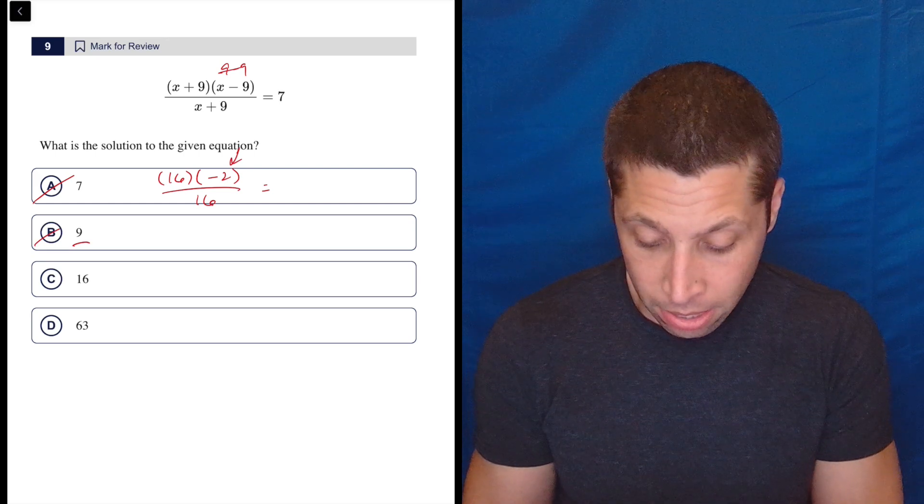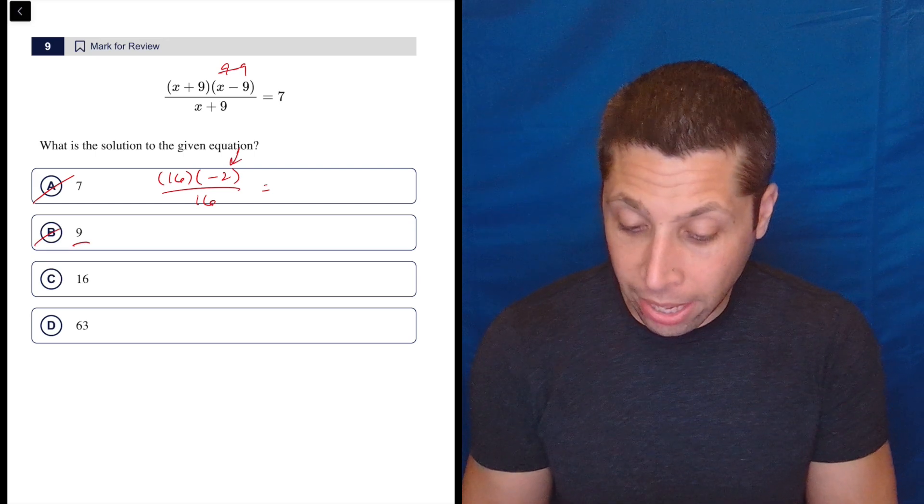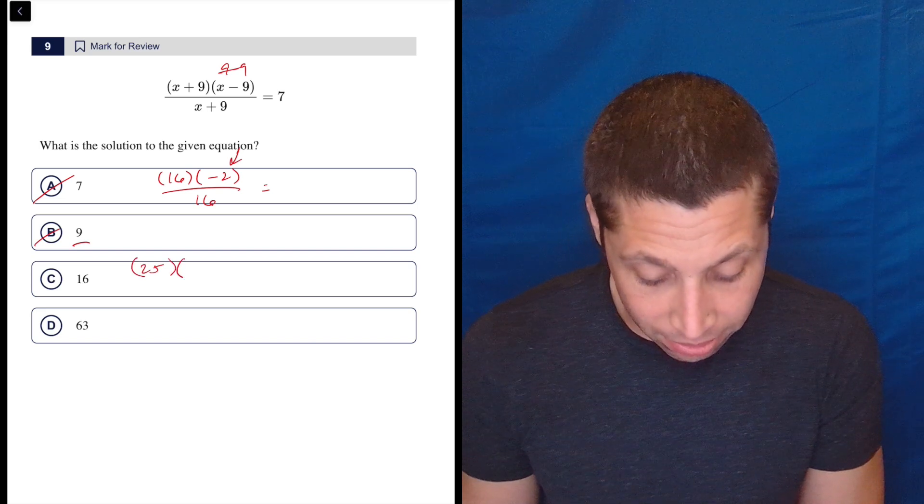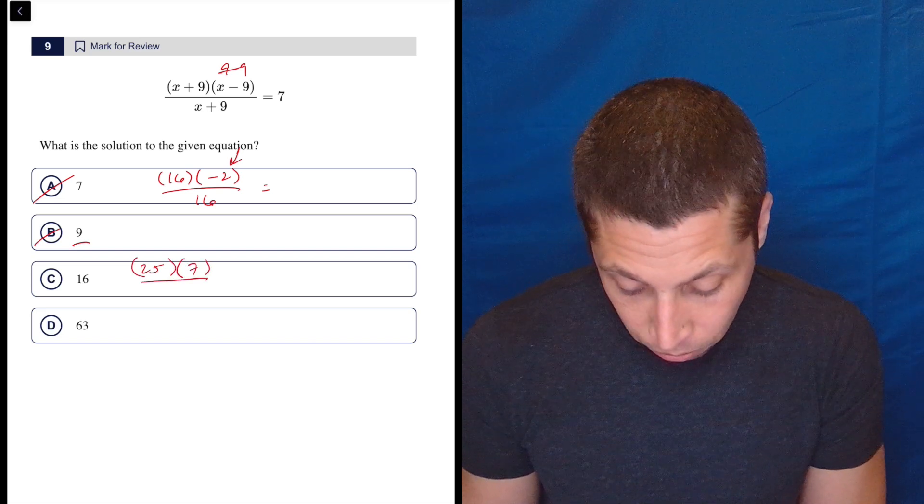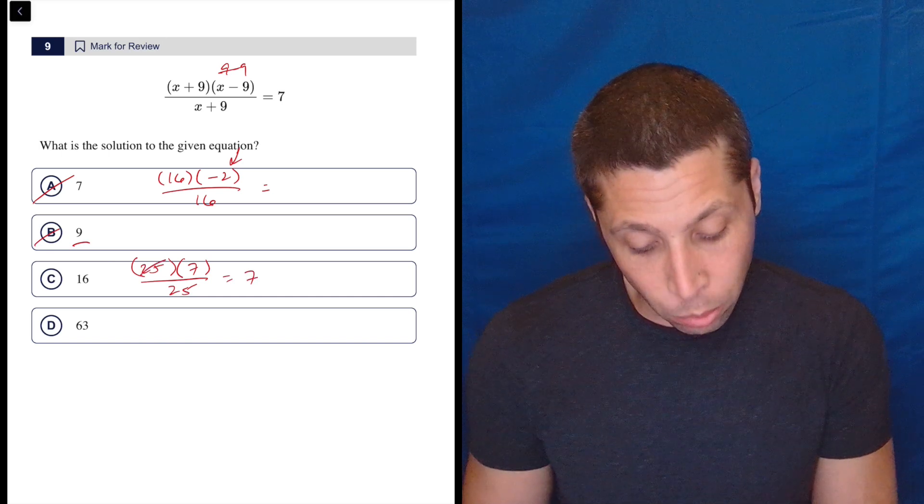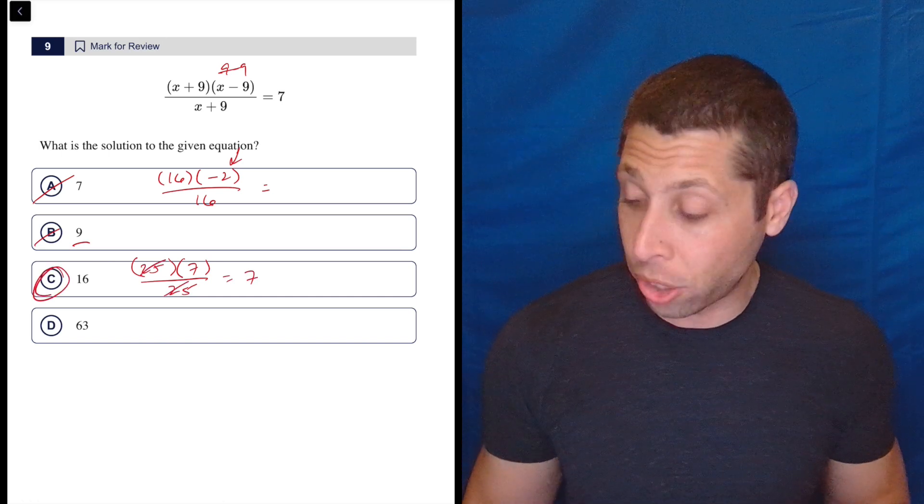So 16 plus 9, I shouldn't have to do that in my calculator, but I'm going to. 25 times 16 minus 9 is 7 over 16 plus 9 is also 25. So there you go. The 25s will cancel. And there's your 7. You could put that in the calculator and double check.